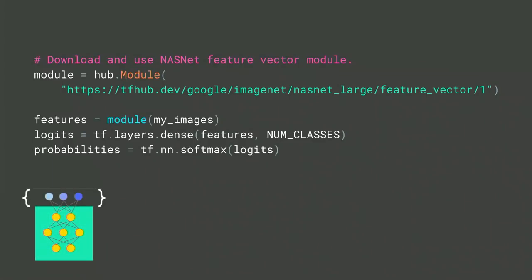We're training just the classification part while keeping all of the module's weights fixed. The great thing about reusing a module is that you get all of the training and compute that went into that reusable portion. In the case of NASNet, it was over 62,000 GPU hours to find the architecture and train the model — plus all of the expertise, testing, and research — and you're reusing all of that in one line of code.